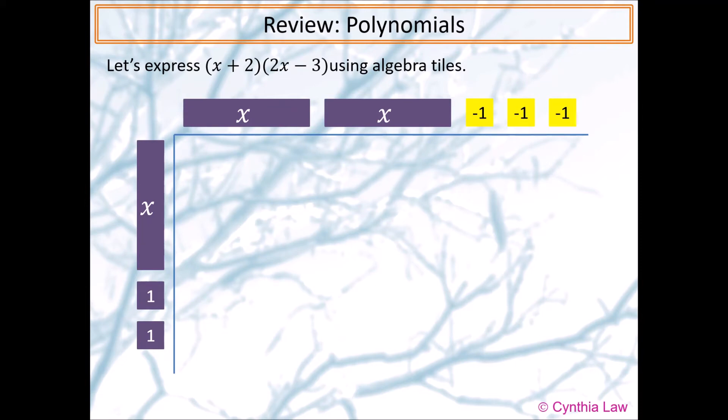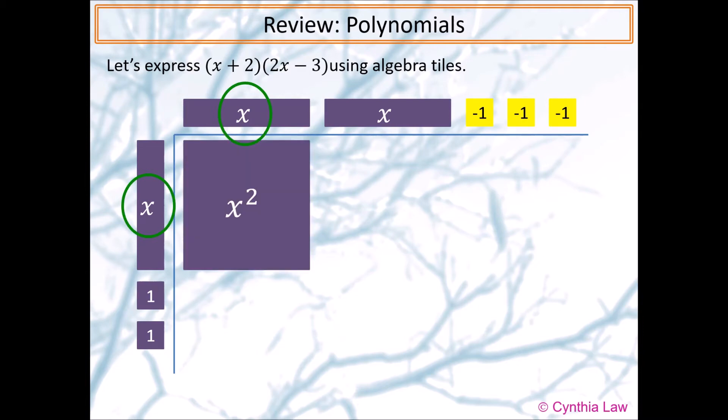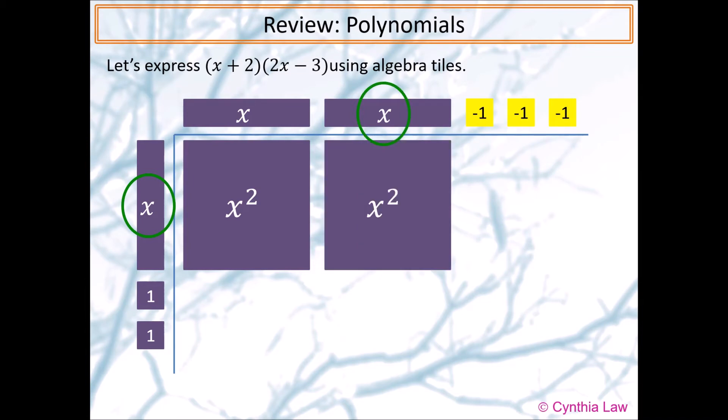Next, we filled in each row as if we are filling in a multiplication table. x multiplied by x is x squared. x multiplied by x is another x squared.